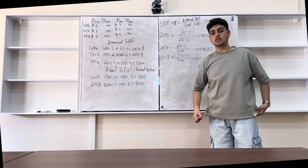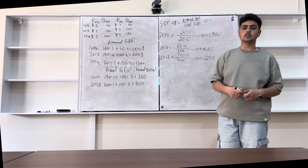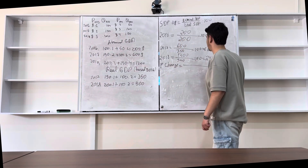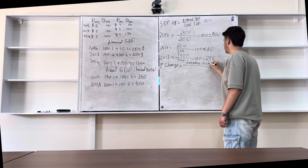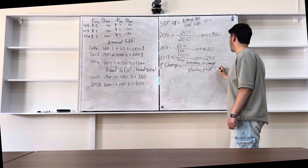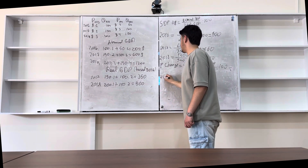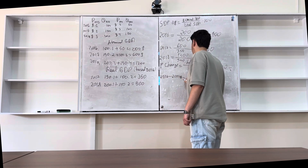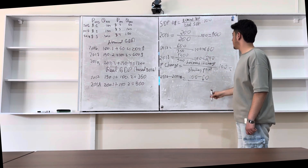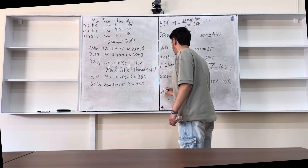Now about percent change. The GDP deflator shows us how prices change from one year to the next. The percent change formula is: how much change divided by the starting point, multiplied by 100. For example, from 2016 to 2017, our percent change is: 171 minus 100, divided by our starting point of 100, multiplied by 100.